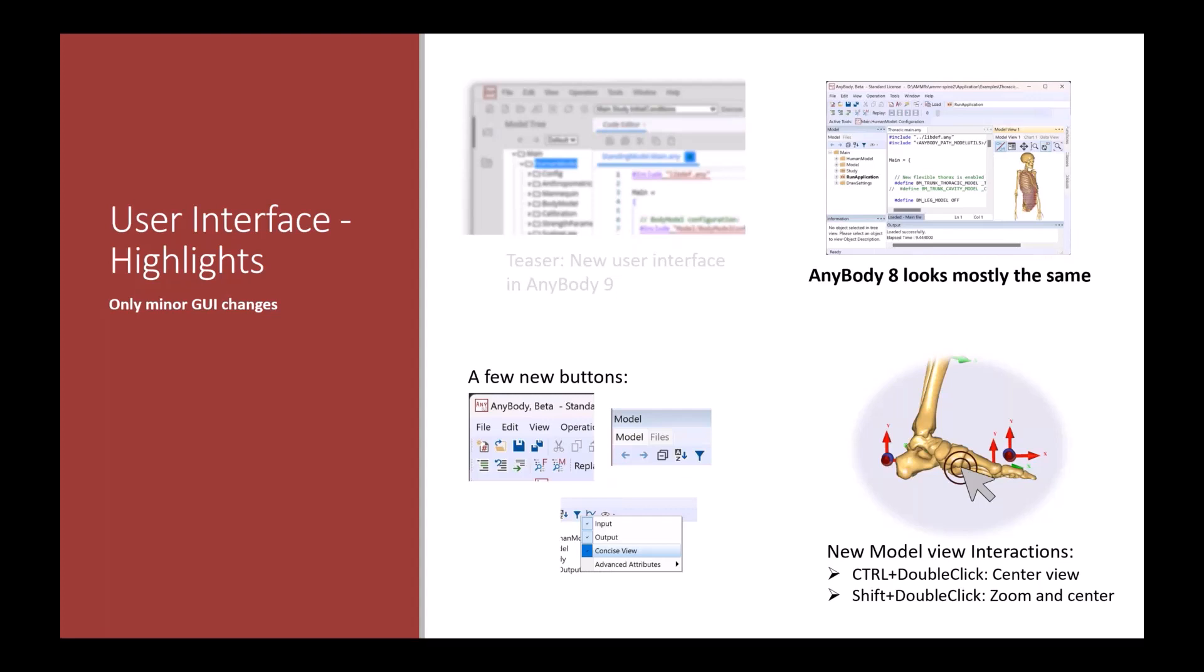Even though it looks the same, you're still going to find some changes, small changes here and there. There are a few new buttons, improvements to the way you interact with AnyBody. If you're using the model view, you'll notice some changes. For example, try to hold Control or Shift when you double-click objects in the model view. That will automatically zoom and center on different objects.